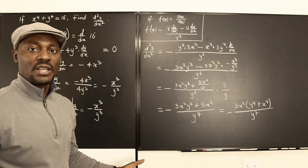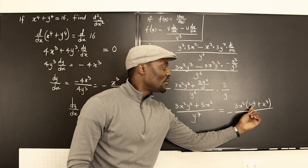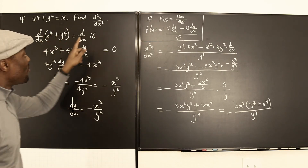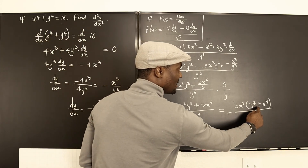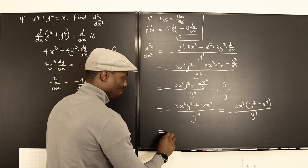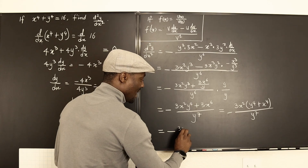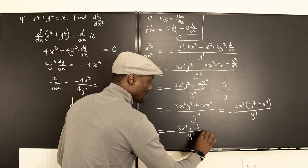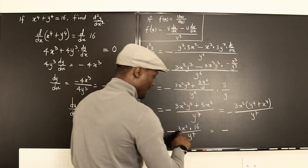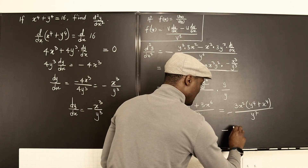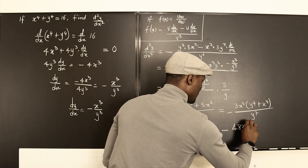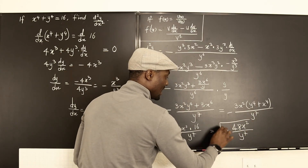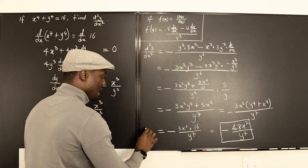We're done with our calculation, but remember — y to the fourth plus x to the fourth was the original equation, and that equaled 16. So we go back and substitute 16 there. That means the expression becomes negative 3x squared times 16 over y to the seventh, which gives us negative 48x squared over y to the seventh. And that is d²y/dx².